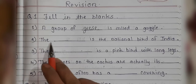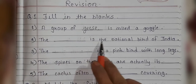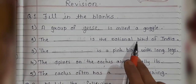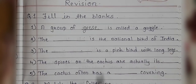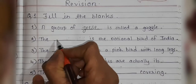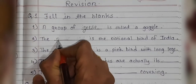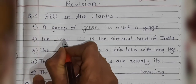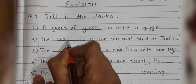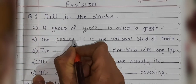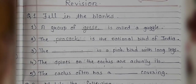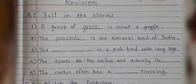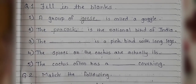Next one: 'The dash is the national bird of India.' And you know it — peacock. P-E-A-C-O-C-K. Peacock is the national bird of India.